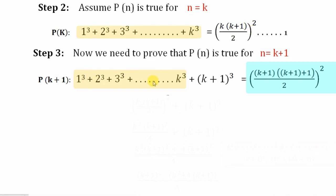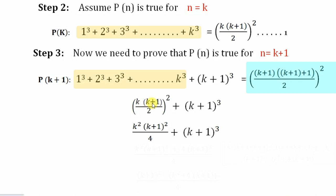We replace those dotted terms — 1³ through k³ — with [k(k+1)/2]² from equation 1, and add the (k+1)³ term. When we split this we get k²(k+1)²/4 plus (k+1)³. Now we take the LCM, and after taking the LCM we can see that there is a (k+1) common in both terms.